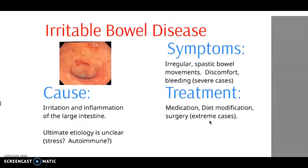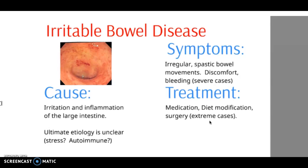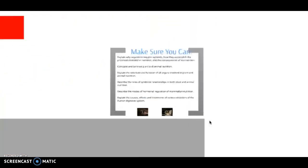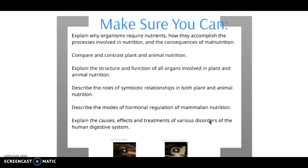The last disorder is irritable bowel disease, which is an inflammation of the large intestine. The cause of this is unclear; however, we do know that the symptom is irregular bowel movement. Finally, make sure that you can answer the review questions and understand all the vocabulary listed in the document, especially the structure and function of each part of the digestive system of animals.